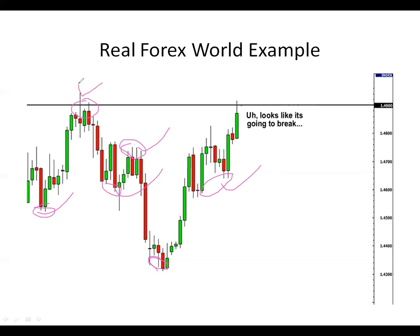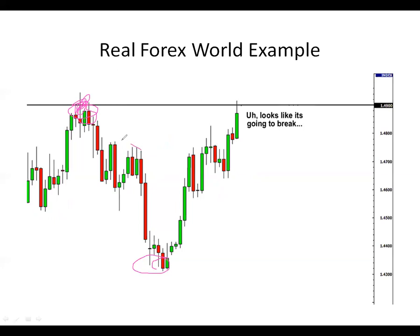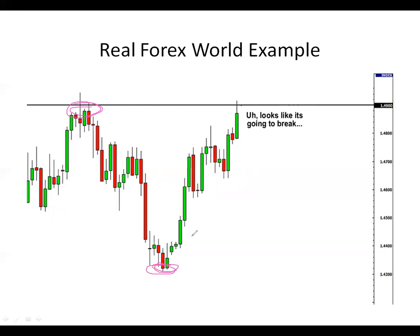This one here is a major resistance. This one here is a major support. Again, this is a major resistance. This is a major support. This is a minor resistance. This is a minor support, this is a minor support, this is a minor support. Now the trade has come all the way up to a major resistance area. We already know that when a trade comes to a very critical level like this, we expect either a break up or a reversal back down.